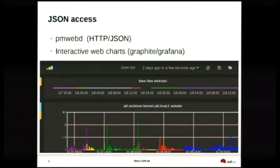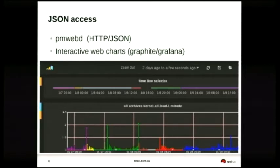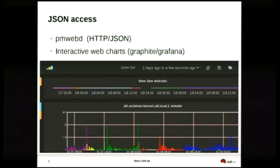In the last six months or so, a big addition has been the HTTP JSON APIs that let you access performance metrics previously available only through C, C++, or Python APIs. There's now a REST API, and we're seeing rich web clients using PCP much more. People have written Graphite and Grafana front ends that sit in front of PCP and can graph PCP data very nicely in browsers, which has been a long-standing request.